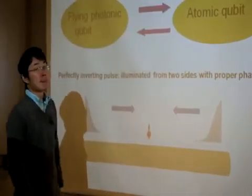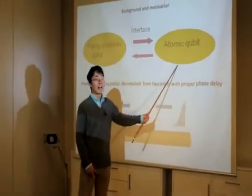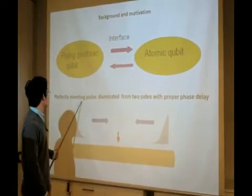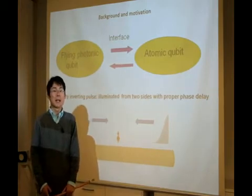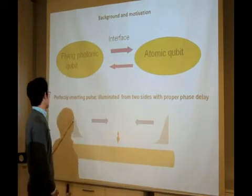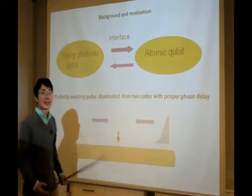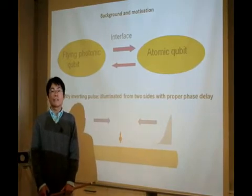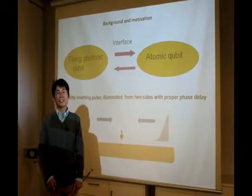Our work is motivated by interfacing a flying photonic qubit onto an atomic qubit. Very recently, it was pointed out that by using a perfectly interfacing path, you can excite the atom with 100% probability. But you need to split the incident single photon wave packet into two parts and illuminate them onto the atom simultaneously with the right phase shift. The question is, can we make things easier? The answer is yes.